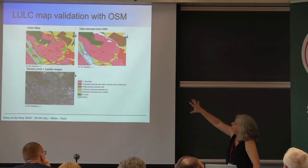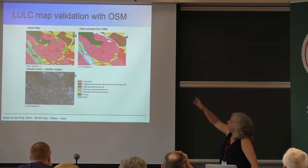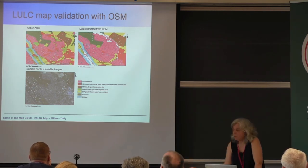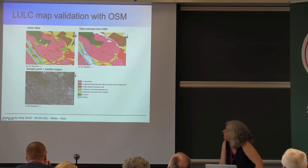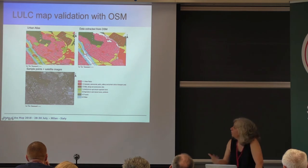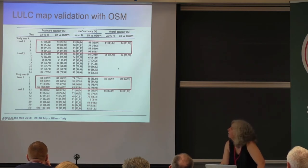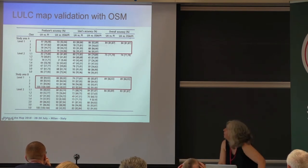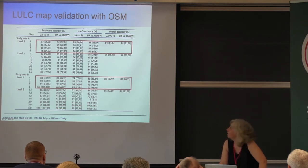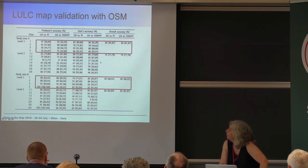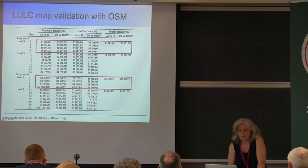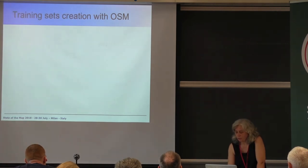To address this bias, we also created a sample. Blue points represent the sample: where there was data in OSM, we extracted it; where there wasn't, we used photo interpretation. The results show high agreement. Comparing Urban Atlas with the sample created by photo interpretation versus OSM combined with photo interpretation shows that for level one, results are almost the same. For level two, there are a few more problems and some classes have lower user accuracy. But for level one, it worked quite well for these regions.